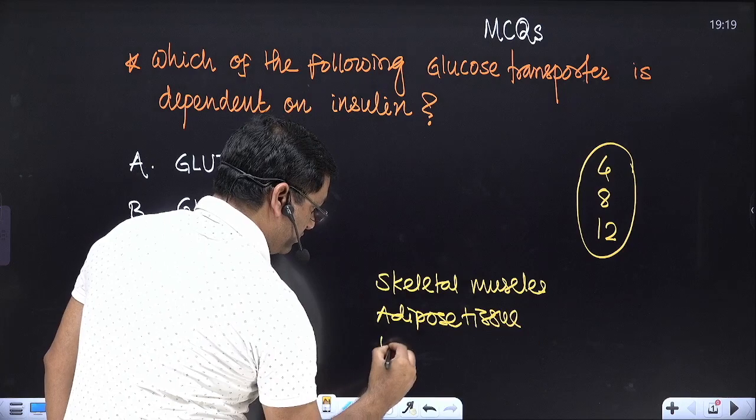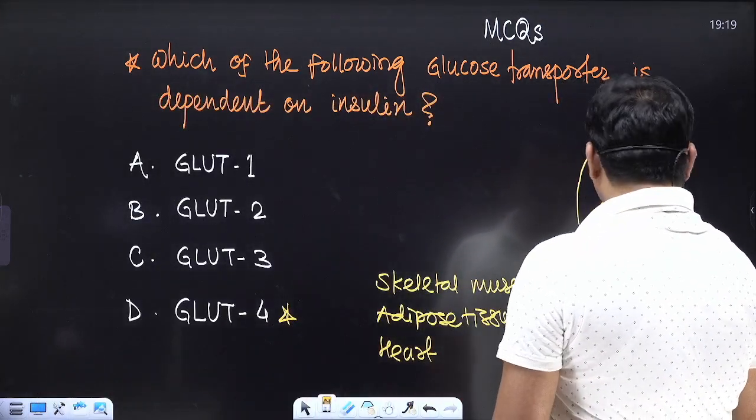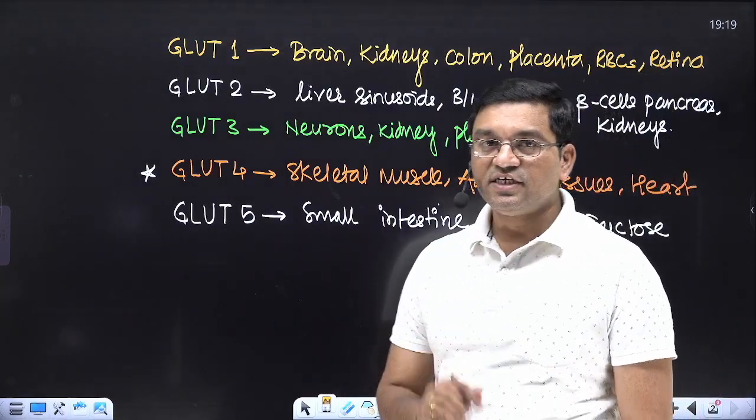and heart. Now, what are the locations of different glucose transporters? These are types of facilitated diffusion.